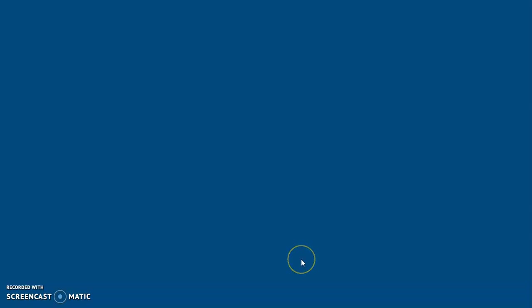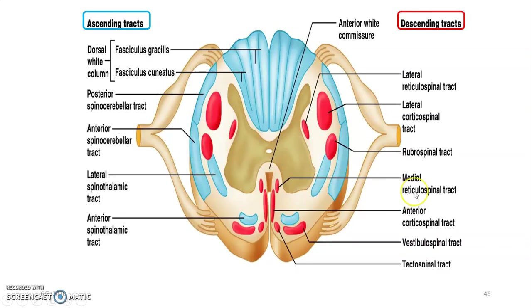This picture shows ascending and descending tracts: ascending tracts on the left, descending tracts on the right. For undergraduate students, you should know at least six ascending tracts and six descending tracts. An exam may ask you to draw a cross-section of the spinal cord showing ascending tracts on one side and descending on the other. These tracts are found on both sides, but listing them separately helps differentiation.